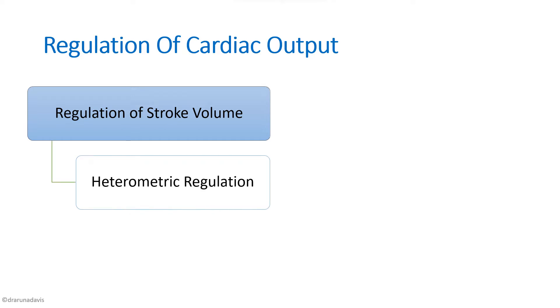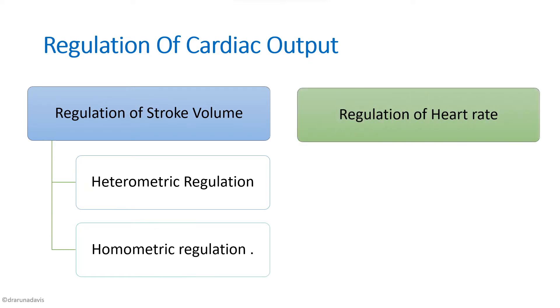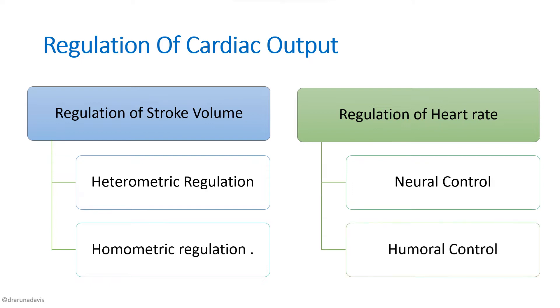In the regulation of stroke volume, we can explain heterometric regulation as well as homometric regulation. In the regulation of heart rate, you can mention neural control as well as humoral control. We will quickly see each one by one.